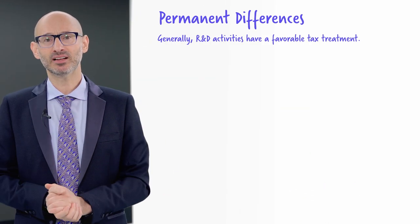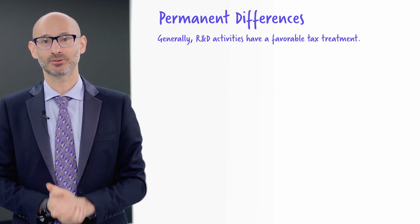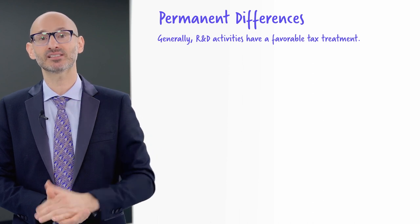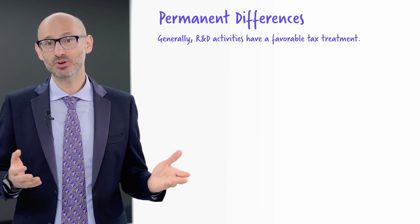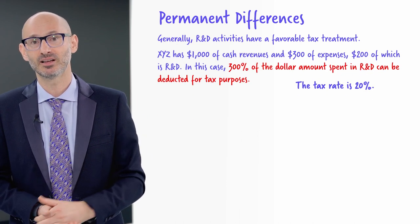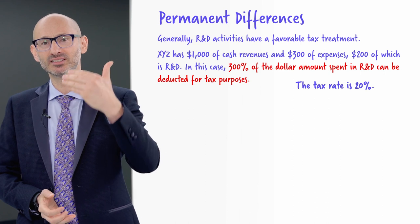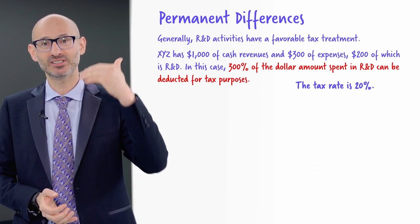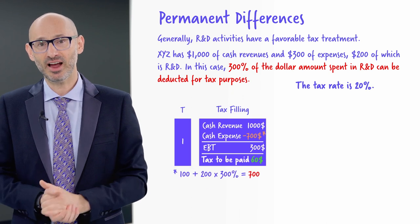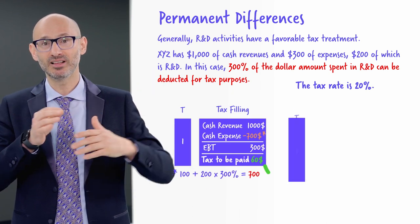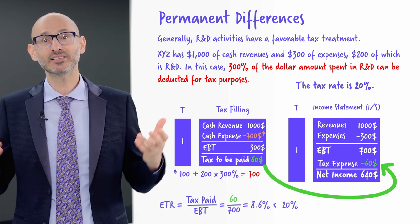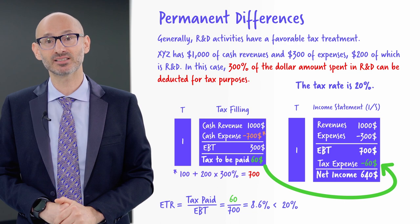If a company is doing R&D, it generally receives a nice deduction. In the US, that deduction is an extra 25%. In the UK, the R&D tax deduction used to be 300%. Assume you have $200 of R&D, which is deducted at a rate of 300%. On your tax filing, your expenses are much more and you pay taxes of only 60, for a total rate of only 8.6%.